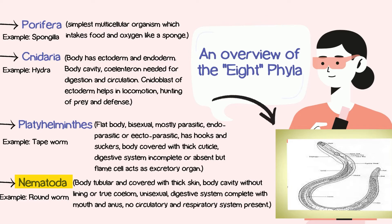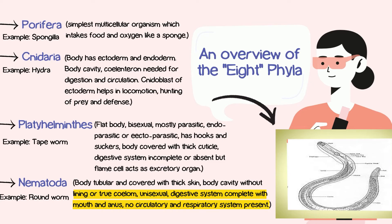A nematode is similar to Platyhelminthes — Platyhelminthes is a tape form and a nematode example is a round worm. The characteristics of nematode include a tubular body with thick skin and a body cavity. Unlike Platyhelminthes, their digestive system is complete — they have a mouth and anus, which are the beginning and ending of the digestive system. They have a circulatory system but no respiratory system. Gender or sexuality is either male or female.